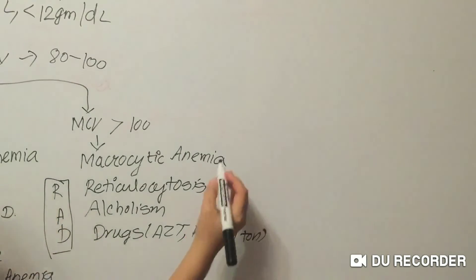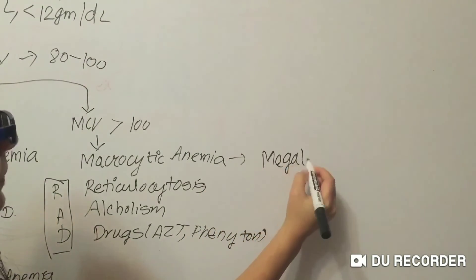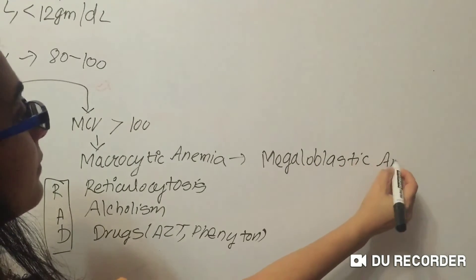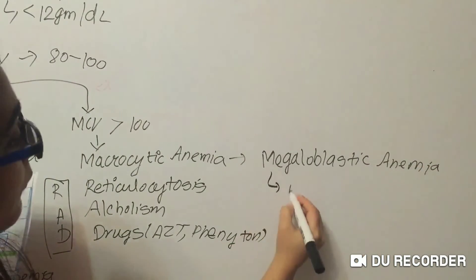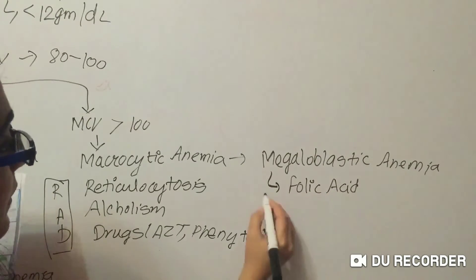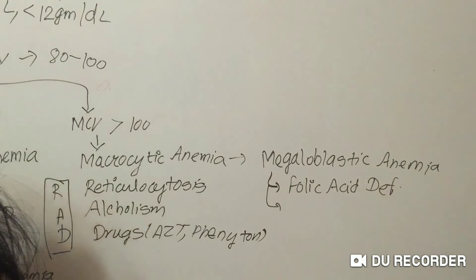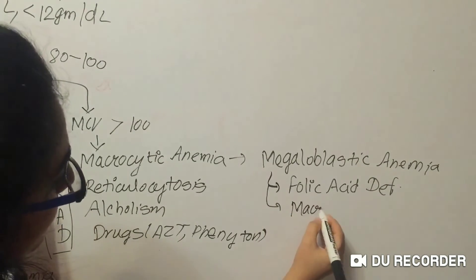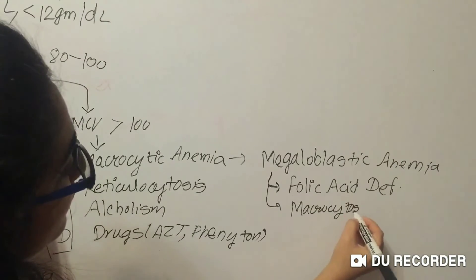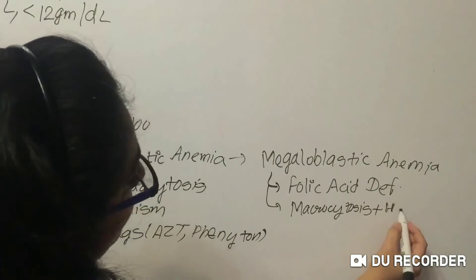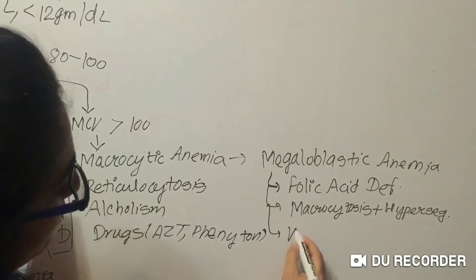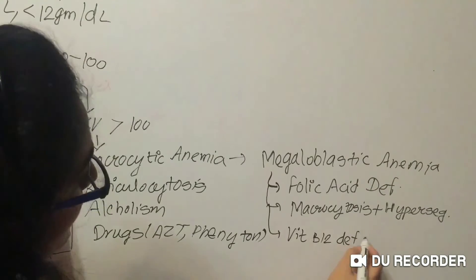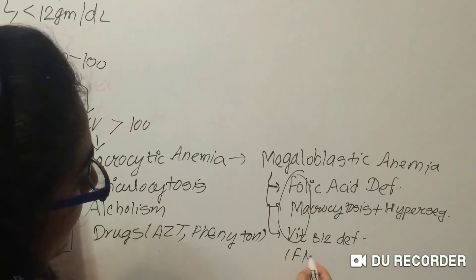Macrocytic anemia includes megaloblastic anemia. In megaloblastic anemia: F — folic acid deficiency, which presents with macrocytosis plus hypersegmented neutrophils; and V — vitamin B12 deficiency. You can remember these by the mnemonic FMV.